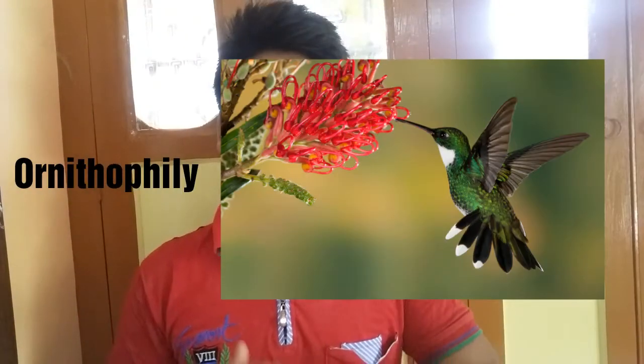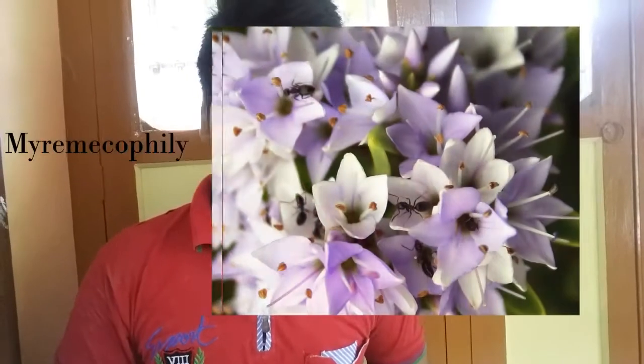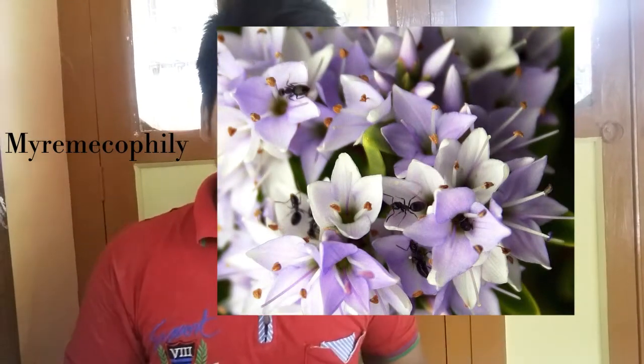The second subtype is anthropophilia, where the agents are human beings. The third is ornithophilia, where the agents are birds. The fourth is myrmecophilia, where the agents are ants. The fifth is chiropterophilia, where the agents are bats. The sixth is hymenopterophilia, where the agents are honeybees.